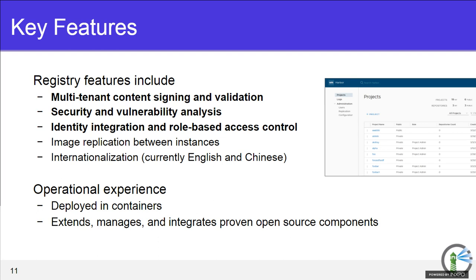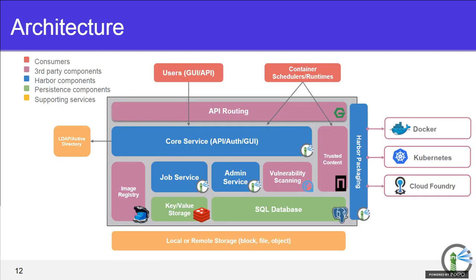For the techies on the call, let's talk architecture. Harbor is several different projects packaged together, tightly integrated, appearing as one product or platform. The API routing layer is nginx doing a reverse proxy. On the right-hand side you'll see Trusted Content — this is Notary, another CNCF project. On the left-hand side is the image registry with the distribution logo — this is the heart of Harbor, how we store images. Docker Distribution version 2 is the de facto standard registry where images are actually stored.